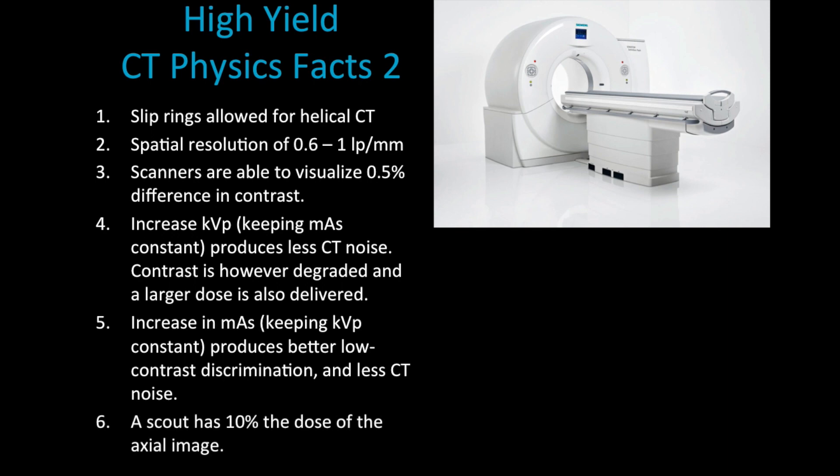A scout, which is the initial image that we take before we prepare for a CT examination, is about 10% the dose of an axial image.